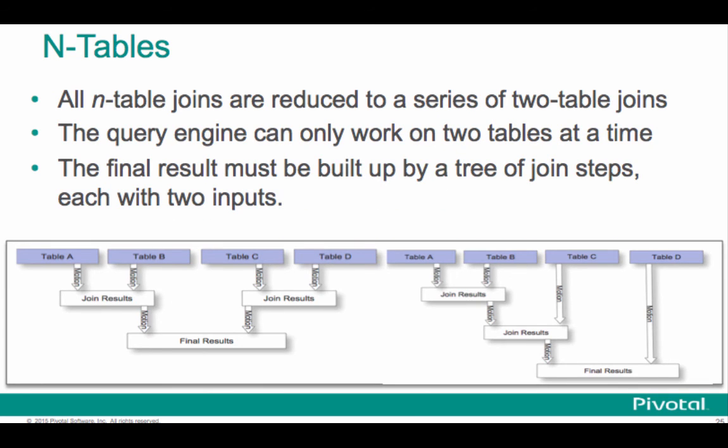If you have tables that you have more than two tables in a join, you have n tables and an n-way join. They're basically reduced to a series of two table joins because the query engine can only work on two tables at a time. So what you do is you build up your result sort of through a tree of join steps, each step having two inputs.